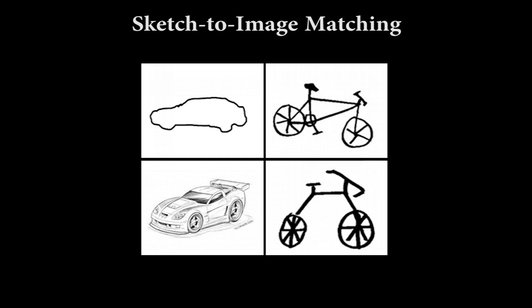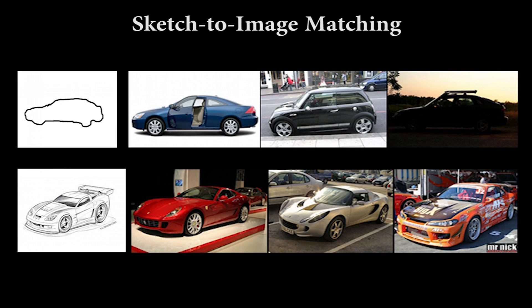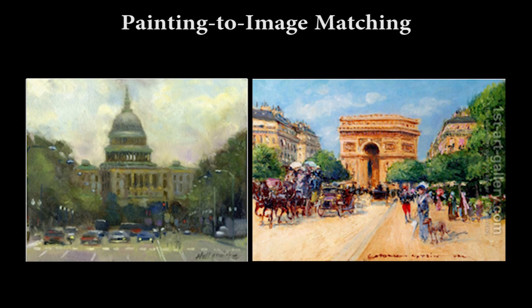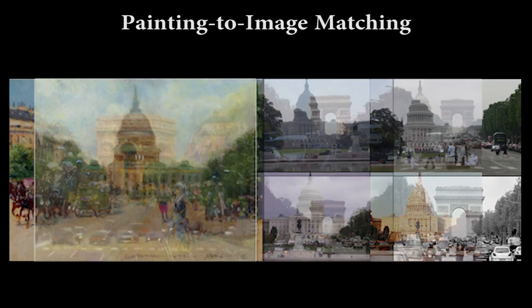Matching sketches to images is a difficult cross-domain task. We find these top matches using images from the entire Pascal VOC dataset. Another challenging cross-domain task is to match paintings to images. Our algorithm shows robustness to gradients due to brush strokes.